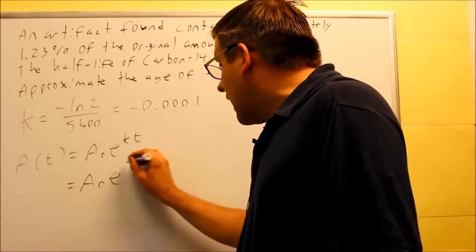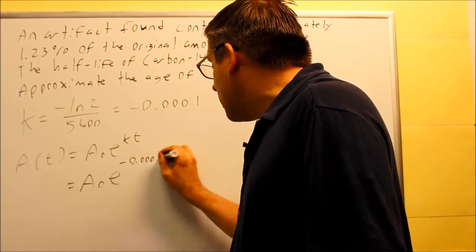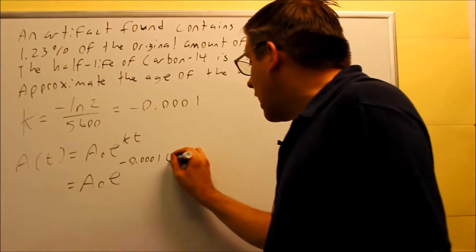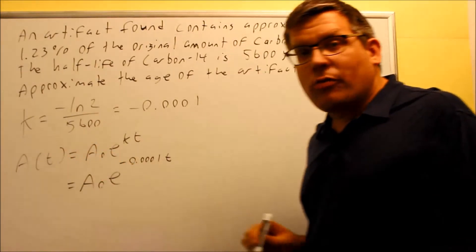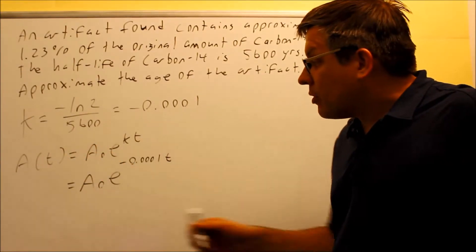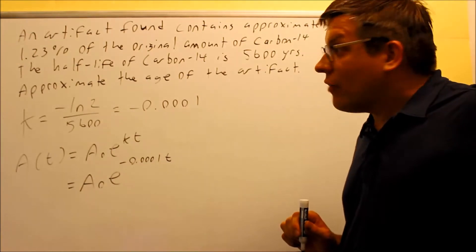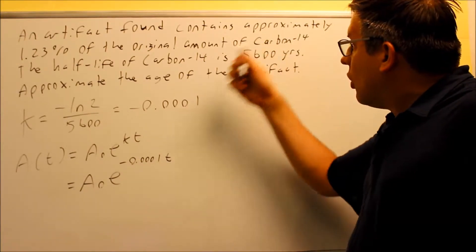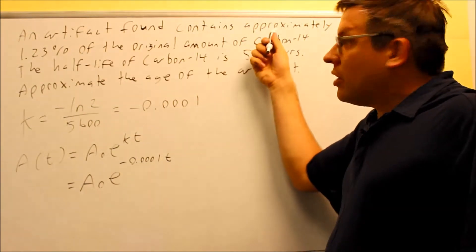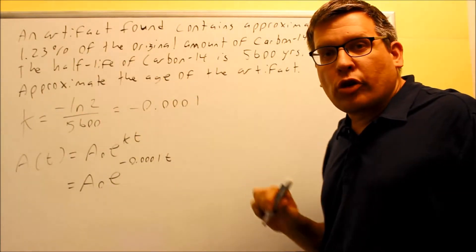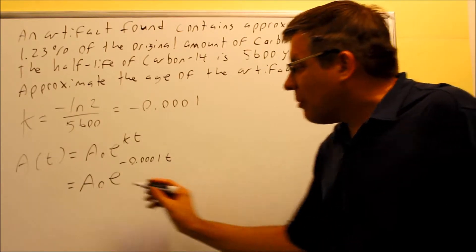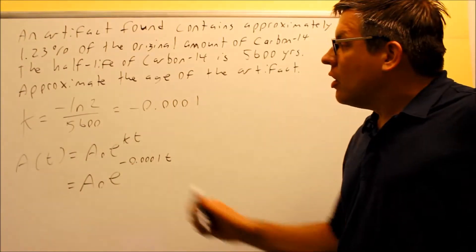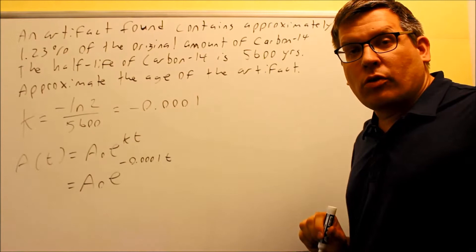I have e to the k, so k, we have the negative 0.0001, and then I have t. So that takes care of this side. Now, we don't have any information about the current population, the current amount that you have. However, we are given this fact that the artifact contains 1.23% of the original amount. So if A₀ is the original amount, that means the amount that I'll be left with is going to be 1.23% of that original amount.